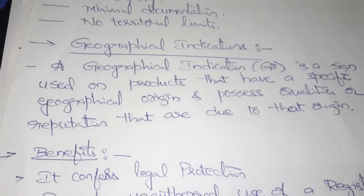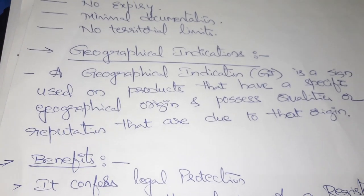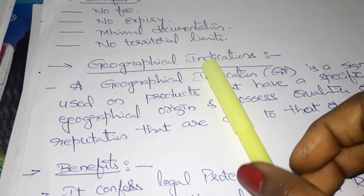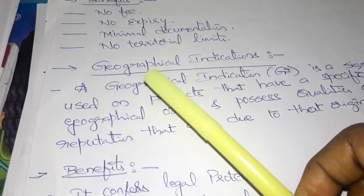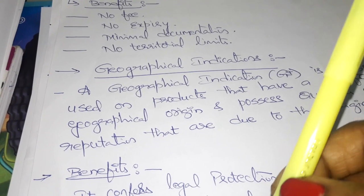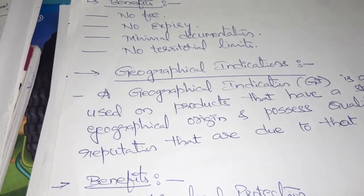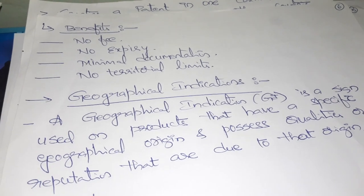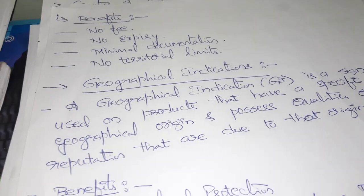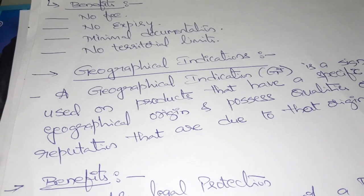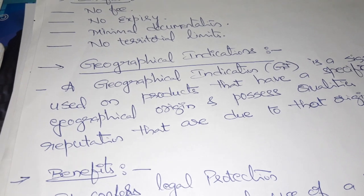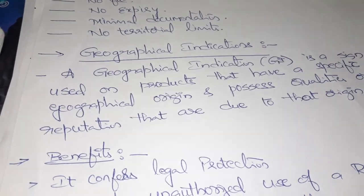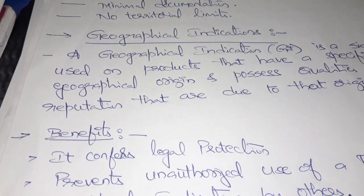Next is geographical indication. For example, if you created a product, it represents from which origin it came. If you observe some products, it will say 'Made in India,' 'Made in China,' 'Made in USA,' and so on. That represents from which origin this product is — that is nothing but a geographical indication. Thank you.